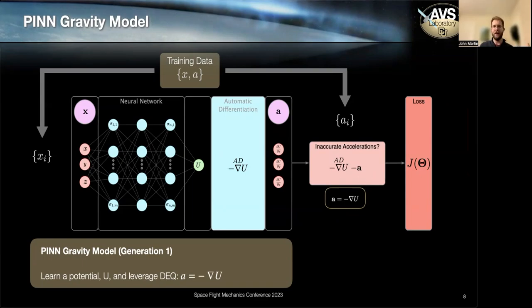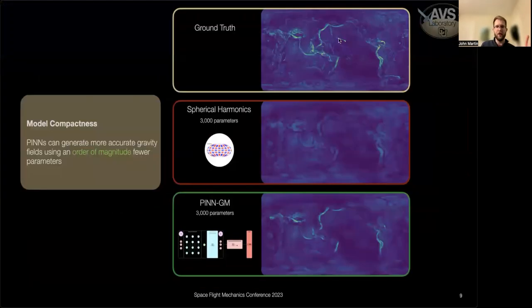And immediately, there are some really cool improvements. So to show this, we look at the true gravity field of Earth above J2. And I run a test where I give spherical harmonics 3,000 coefficients to try and reproduce this field as accurately as possible.